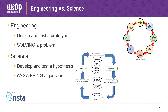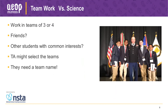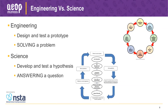When it comes to choosing the type of project, students can choose either an engineering project or a science project. The easiest way to tell the difference: if you're trying to solve a problem, you're doing engineering — you'll be designing and testing a prototype. Science is about answering a question — developing and testing a hypothesis. So the delineation is solving a problem versus answering a question.